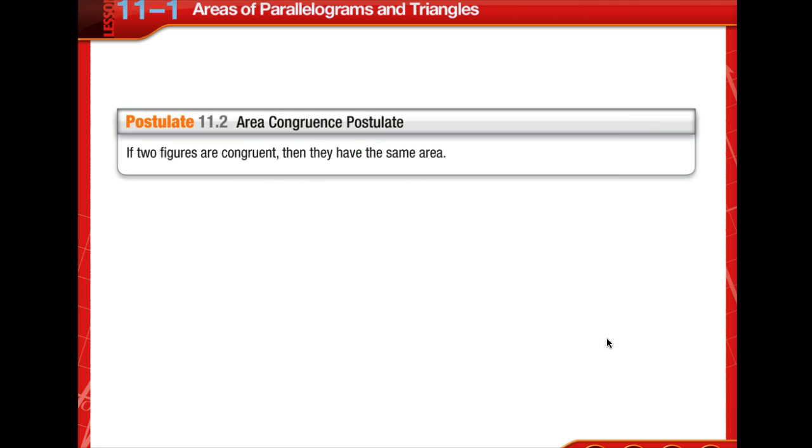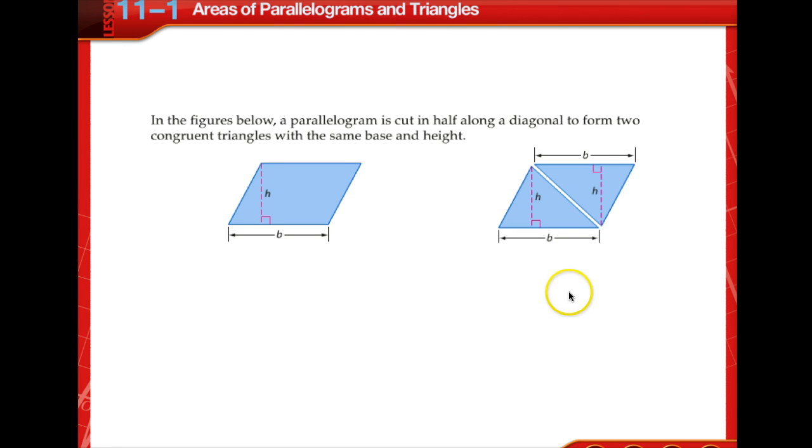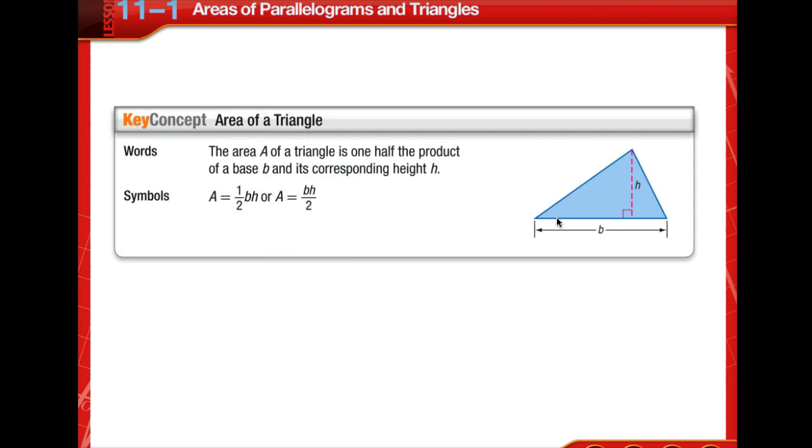You can use Postulate 11-2 to develop the formula for the area of a triangle. And this states if two figures are congruent, then they have the same area. In these figures, a parallelogram is cut in half along a diagonal to form two congruent triangles with the same base and height.